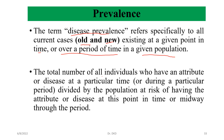The total number of all individuals who have an attribute or disease at a particular time or during a particular period, divided by the population at risk of having the attribute or disease at this point in time or midway through the period. This is the basic meaning of prevalence.